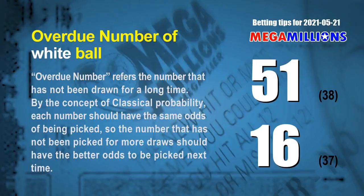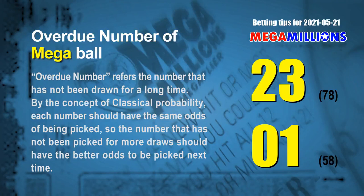Overdue numbers refer to numbers that have not been drawn for a long time. By classical probability, a number not picked for more draws should have better odds to be picked next time. The two most overdue white balls are 51 (not drawn for 38 draws) and 16 (not drawn for 37 draws). The two most overdue Mega Balls are 23 (not drawn for 78 draws) and 01 (not drawn for 58 draws).